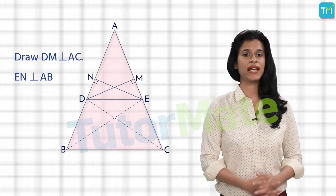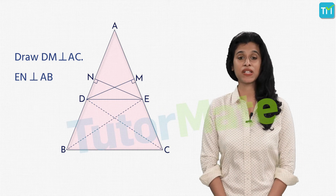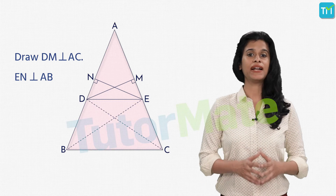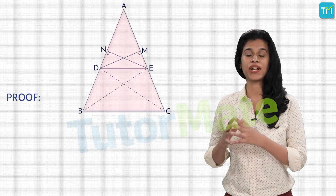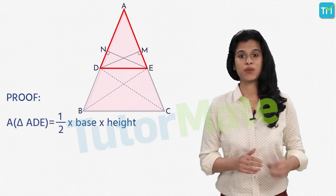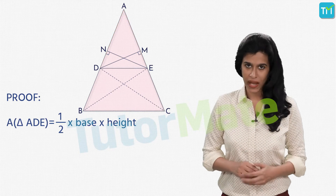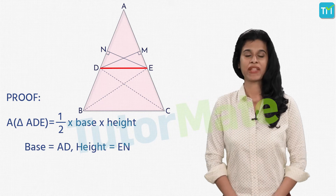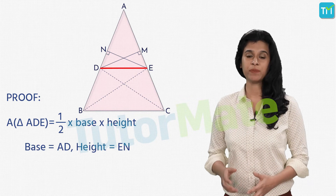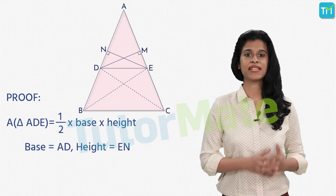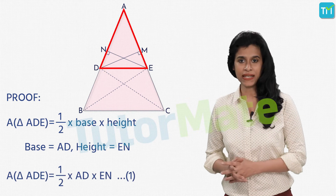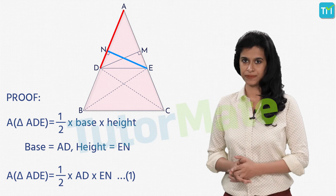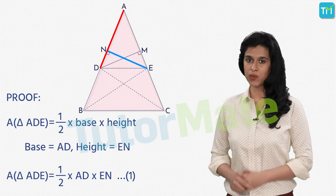We know that the area of a triangle is calculated as half into base into height. So if we calculate the area of triangle ADE, considering the base as AD, the corresponding height would be EN. This gives us: area of triangle ADE is equal to half times AD times EN. Let's label this as Statement 1.